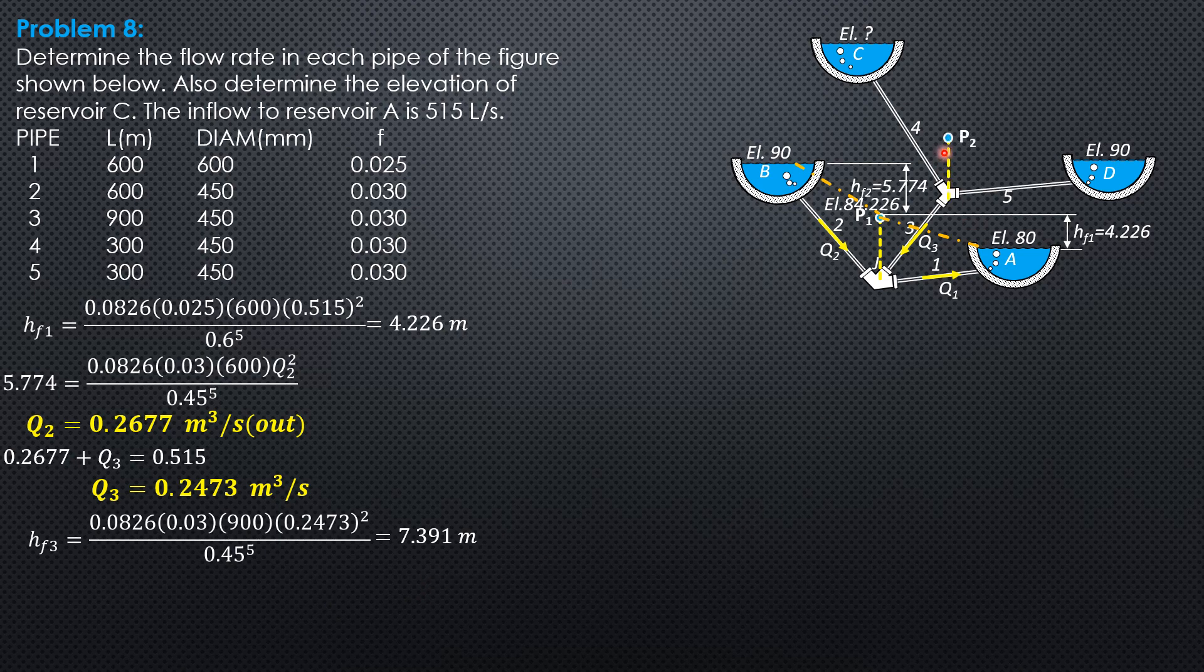That's the energy level. Then the difference, vertical difference, is the head loss. That's the direction. HF3 is 7.391, we have just computed. So the elevation of this P2 here is 84.226 plus 7.391.